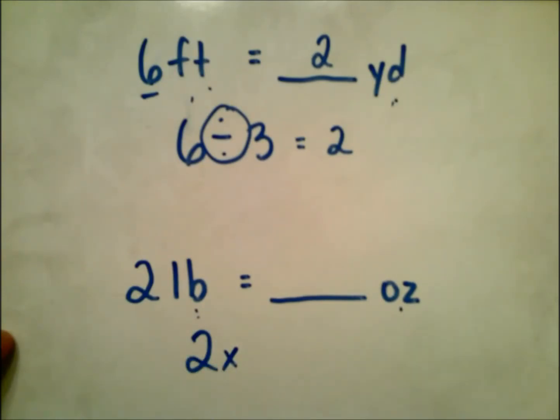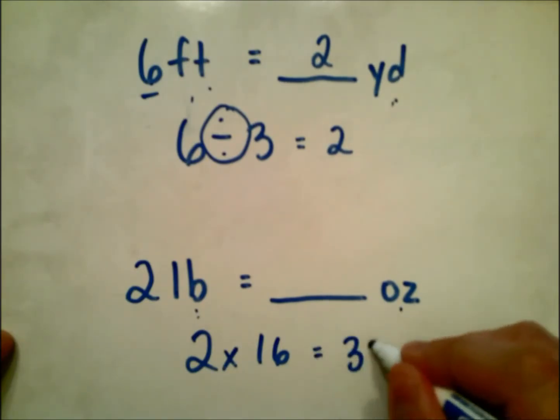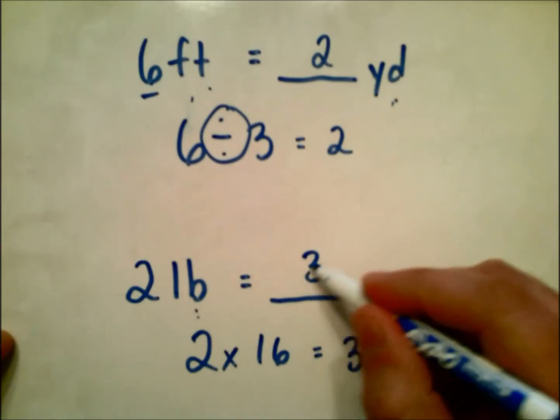We're going to multiply by the number of ounces we know are in each pound, and we know that there are 16 ounces in every pound. So we multiply these together, we're going to get 32, and 32 ounces.